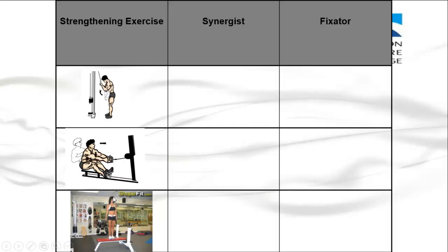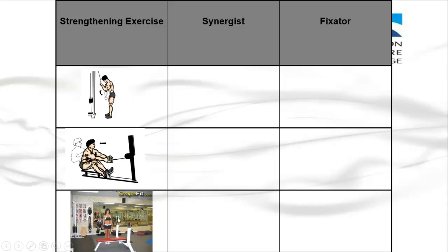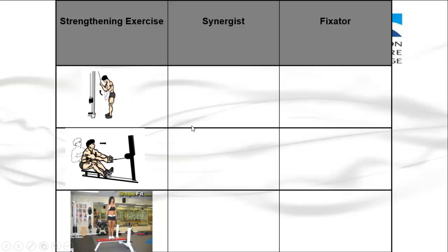Here are some more exercises: a triceps extension, a seated row, and a step up. Think about which muscles would be the synergist and which muscle would be the fixator for each exercise.